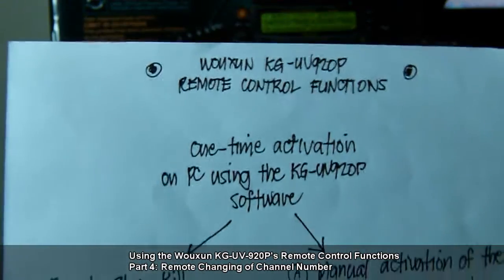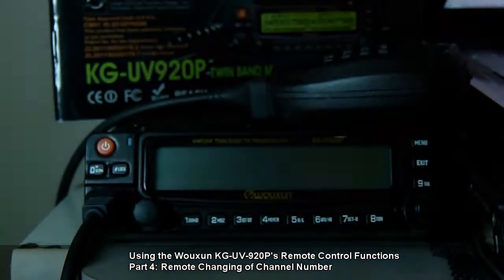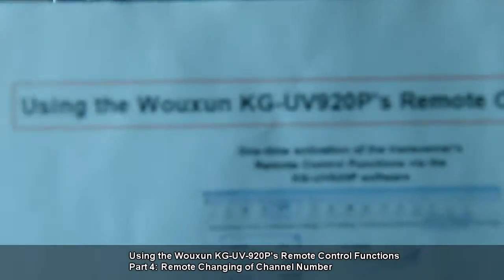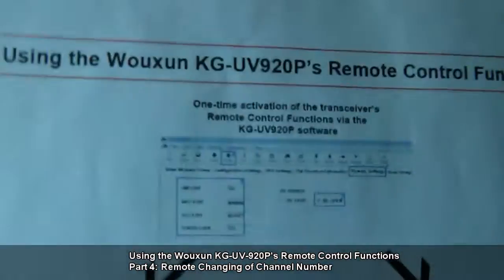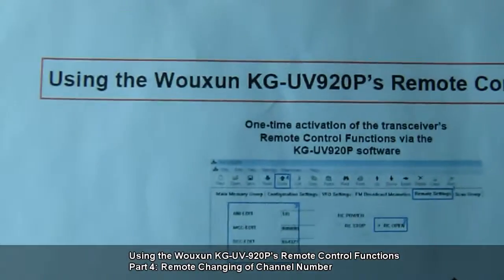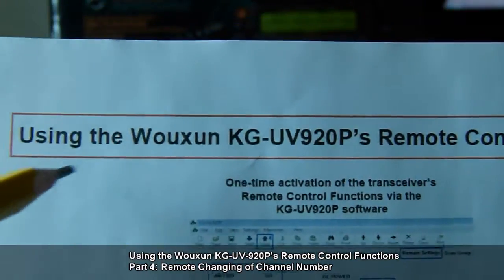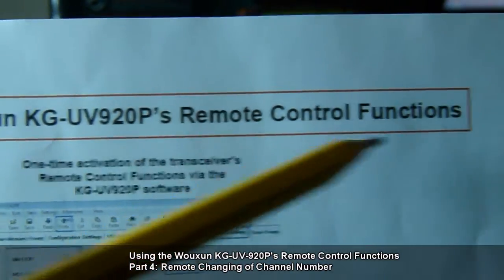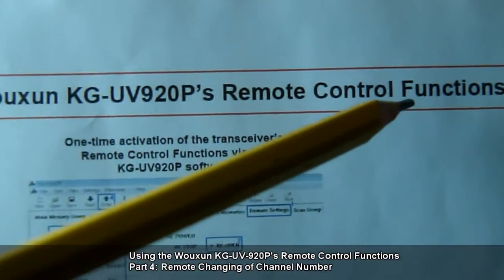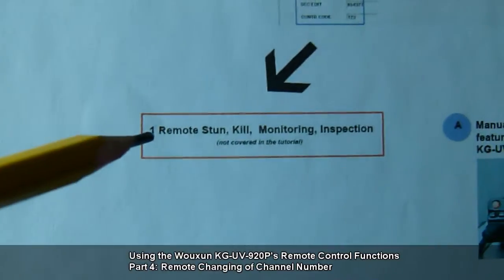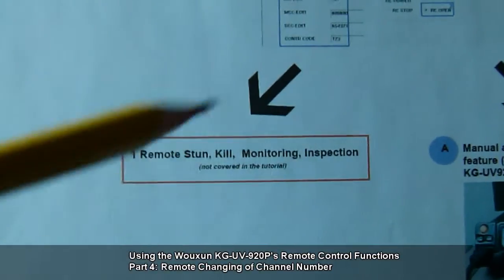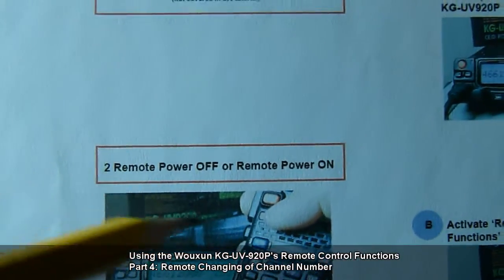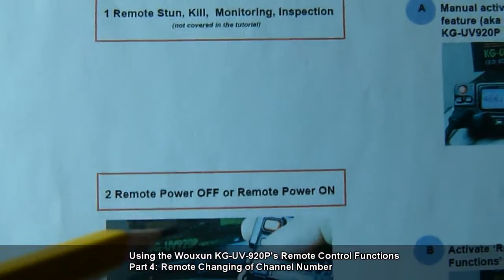The contents of this flowchart I have encoded and printed out a digital copy, and here's the hard copy of it. The topic that we are discussing is using the OceanKG UV920P's remote control functions. One of the remote control functions is remote stun, which will not be covered in the series, and remote power off or power on, which I covered in part 2.